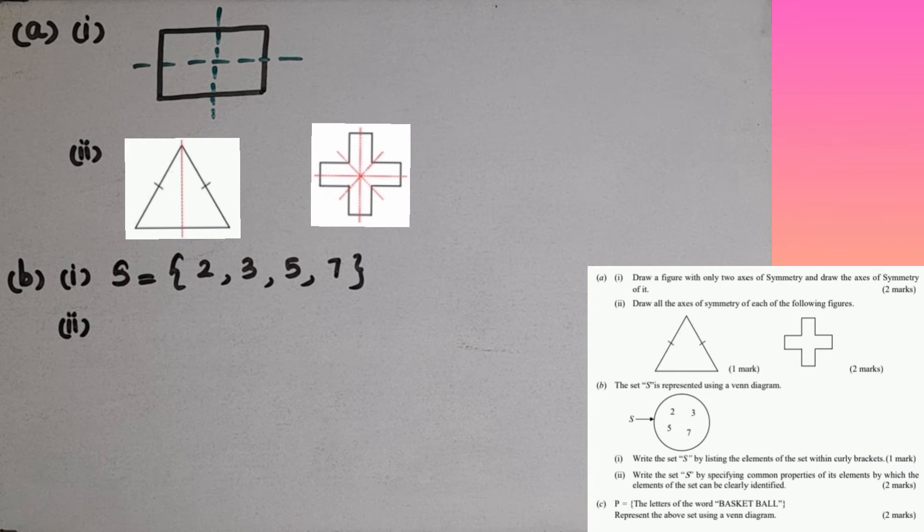Write the set S by specifying common properties of each element by which the elements of the set can be clearly identified. These are prime numbers but there is a limit. What is the limit here? They are between 1 and 10 or from 1 to 10.